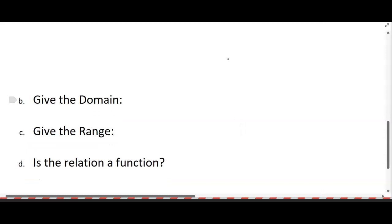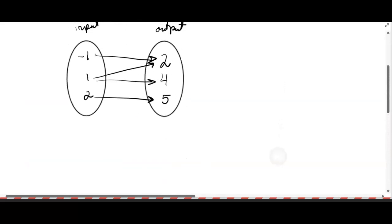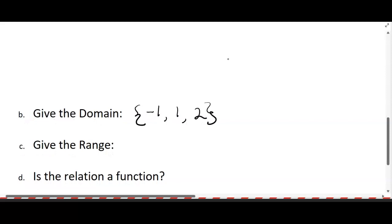So what was the domain? It's the set—this needs to be set notation. Negative one, comma one, comma two. Yeah. And then the range, same thing, set notation: two, four, five.